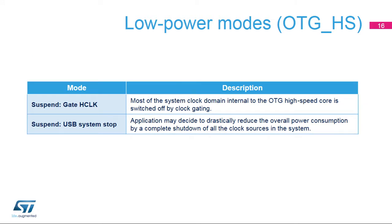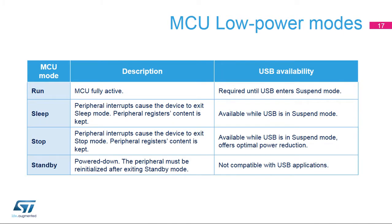Low-power modes for the high-speed core are similar to the full-speed one, but the modes concerning the PHY are not listed, as in this case the PHY or transceiver is an external component. The USB peripheral is active in run and sleep modes. In stop mode, the USB is not available, but the contents of its registers are kept. In standby mode, the USB peripheral is powered down and must be reinitialized when returning to a higher power state.